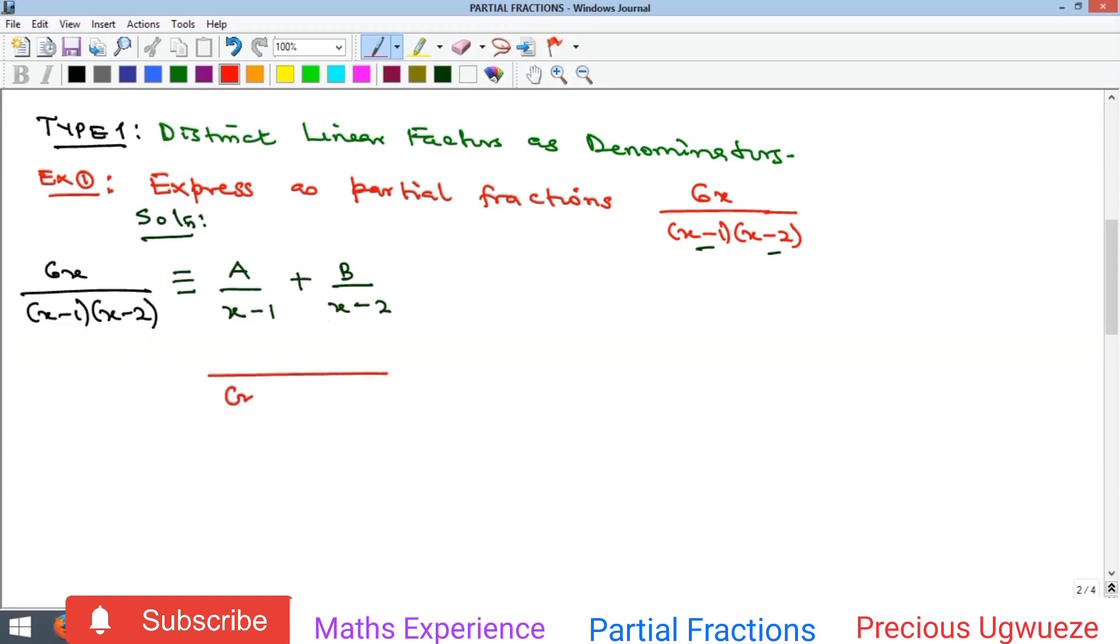If we cancel, we'll get x minus 2, so that will be A times (x minus 2). Then if we cancel here, we're going to have x minus 1, which gives us B times (x minus 1). Remember that 6x over (x minus 1)(x minus 2) is equivalent to this.